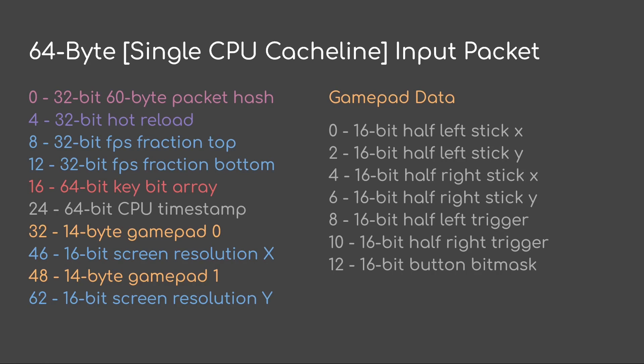Here's an example 64-byte single CPU cache line input packet. In this case this is what I'm using when I don't need the mouse. On the top I have a 32-bit hash, followed by a 32-bit hot reload counter — that counter is for when I hot reload the shaders. The next 32 bits I'm using for an FPS fraction top and bottom, giving a high precision FPS. Then I have a 64-key bit array indicating whether the key is pressed or not. Then a 64-bit CPU timestamp of when the input packet was made. Then 14 bytes for gamepad 0, a 16-bit screen resolution X, another 14 bytes for gamepad 1, and a 16-bit screen resolution Y.